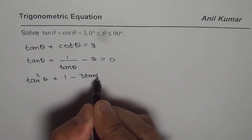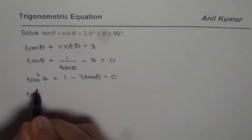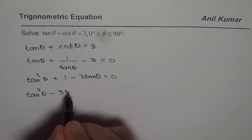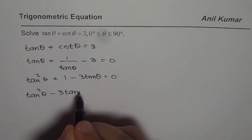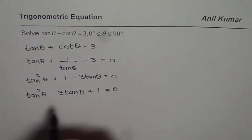And if I rearrange it, I get a quadratic equation in tan. So that is what I meant by using tan θ as a variable. It could have any value. So that is the whole concept.